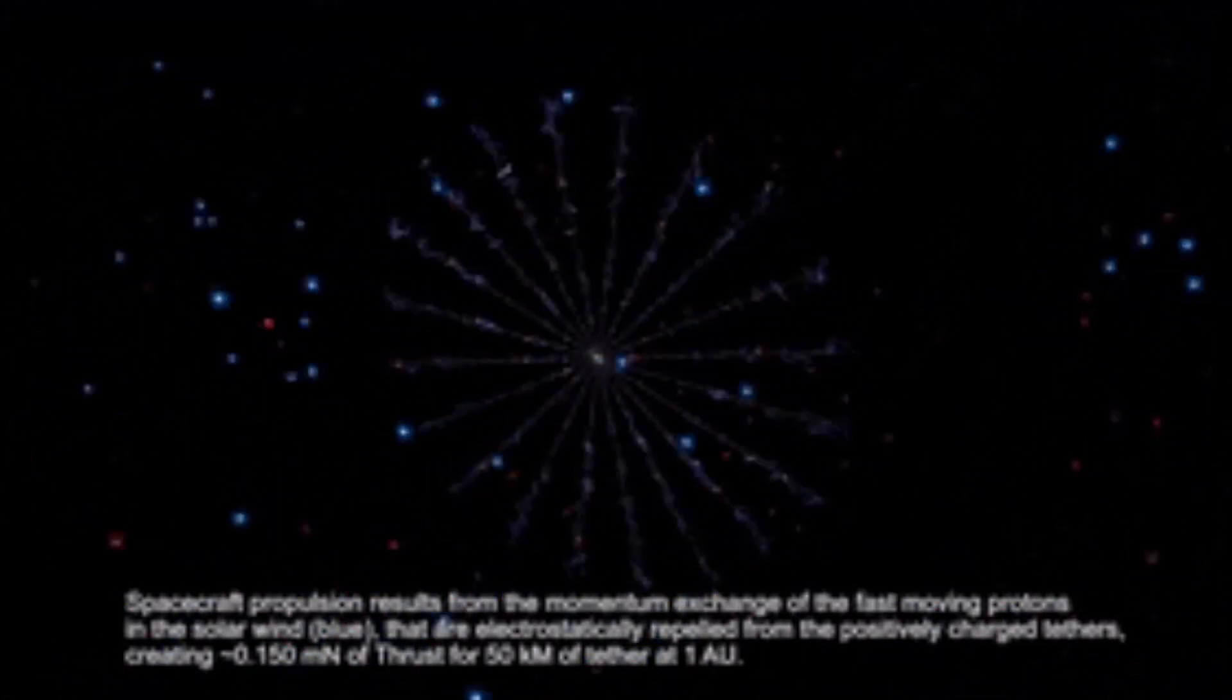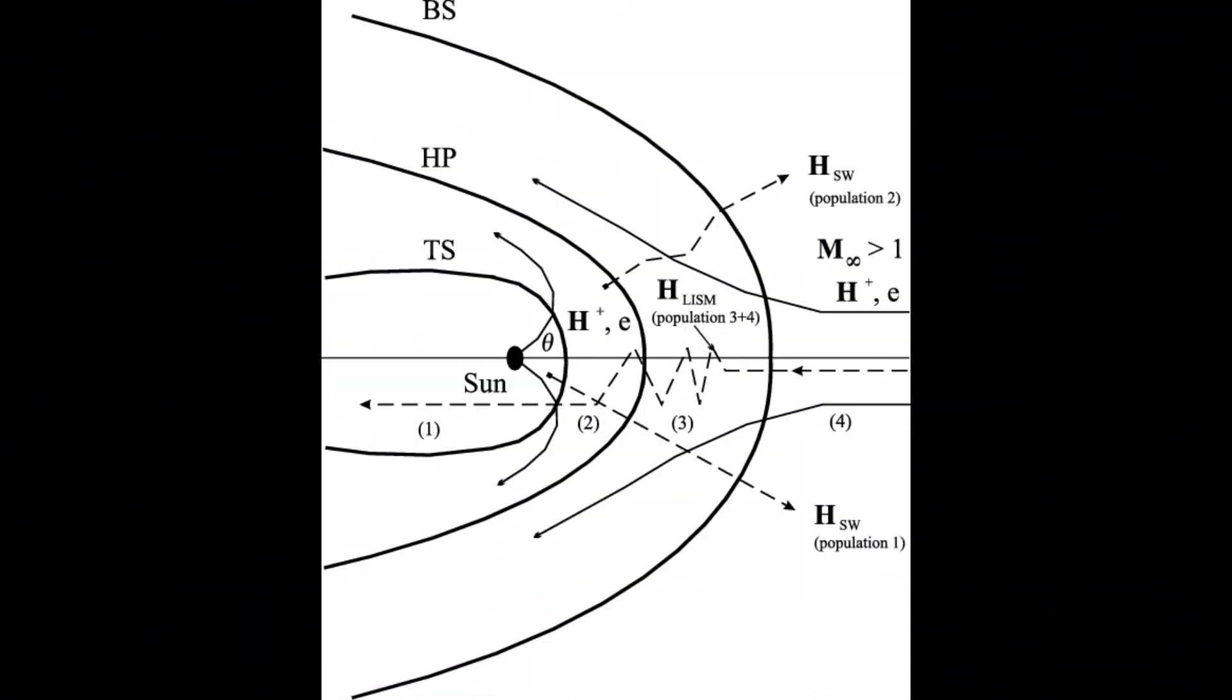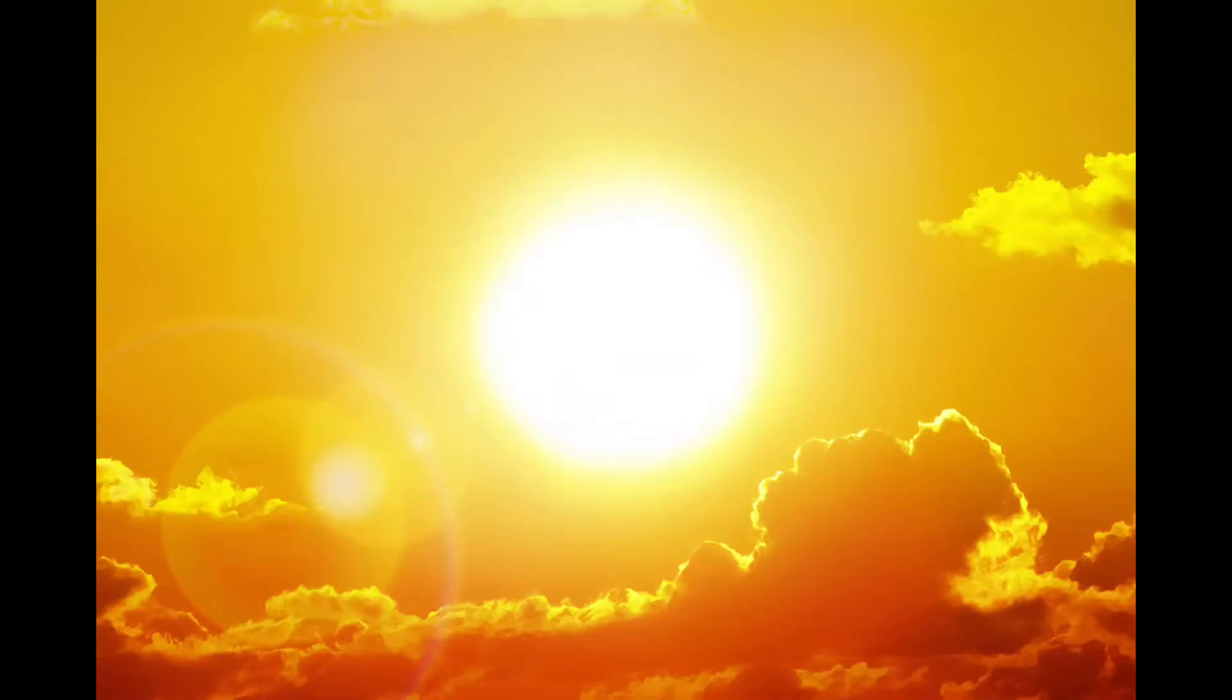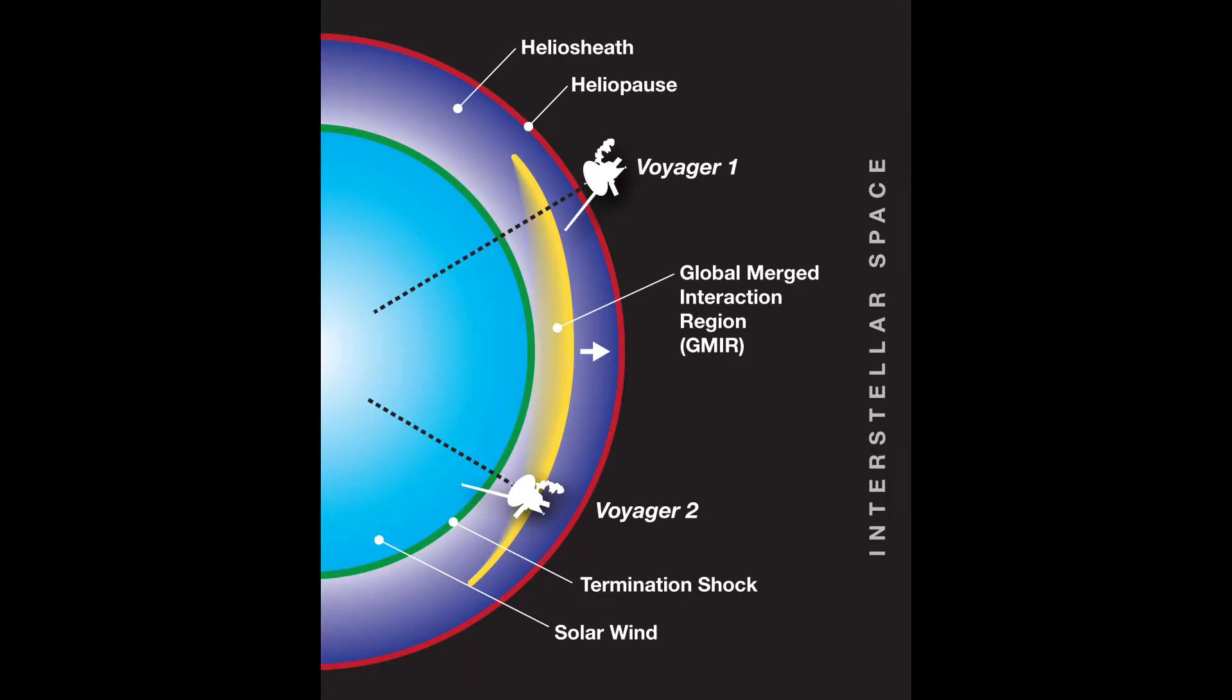The heliopause is a fascinating place. The sun is constantly casting a stream of charged particles, a supersonic wind of ionized plasma out into space. Eventually, the solar wind loses strength over distance so that it is no longer sufficient to push against the pressure of interstellar space. The point at which that happens is the heliopause.